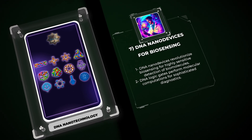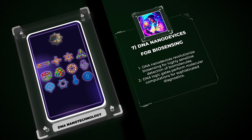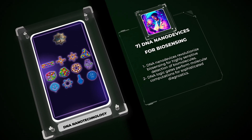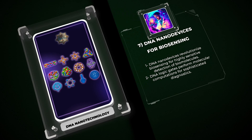One example of DNA nanodevices for biosensing is DNA logic gates, which are programmable devices that can process multiple inputs to produce a desired output. These gates utilize DNA strand displacement reactions to perform molecular computations, allowing for sophisticated diagnostic applications.